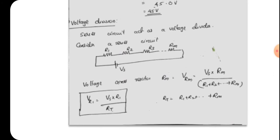The next topic is voltage division. Voltage division is applicable to a series circuit — a series circuit acts as a voltage divider. For a series circuit with voltage source Vs and series resistances R1, R2, R3 up to Rm, the voltage drop across R1 equals Vs times R1 divided by the total resistance, where total resistance is R1 plus R2 plus R3 plus Rm.